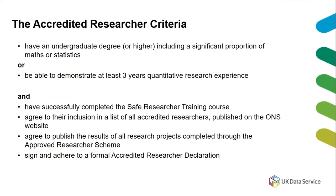The AR criteria are really about ensuring you have the expertise and experience to actually do the analysis and work with these data. They ask whether you have an undergraduate degree or higher that includes a significant proportion of maths or statistics, or alternatively you can demonstrate at least three years of quantitative research experience. You also have to complete the safe researcher training course, agree to your inclusion on the list of AR researchers, agree to publish the results completed through this scheme, and sign a formal accredited research declaration.